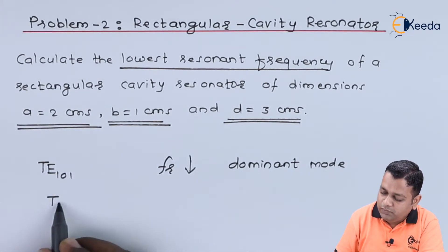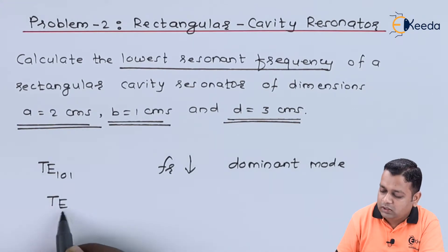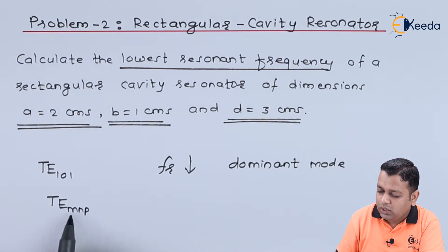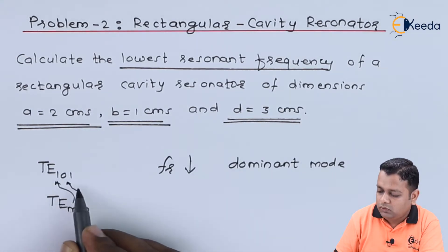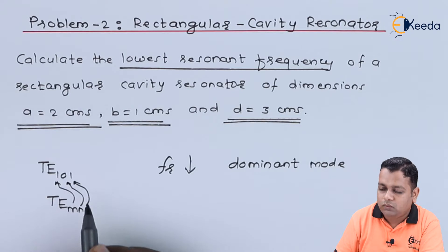In general, we represent transverse electric as TE subscript m-n-p. So m equals 1, n equals 0, and p equals 1.